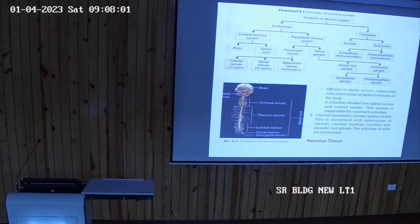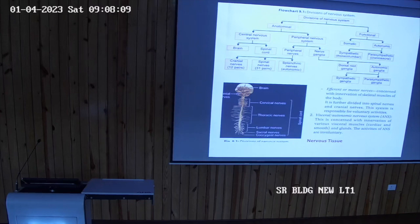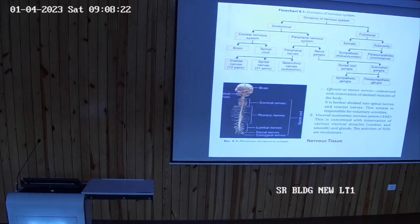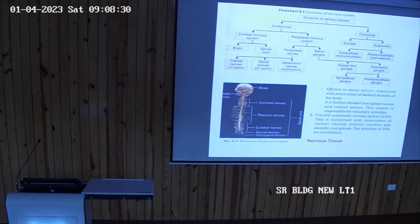The nervous system is a specialized system of basic tissues. The property of the nervous system is conductivity — it conducts impulses from the central nervous system to different parts of the body, and also receives information from different parts of the body or from the surroundings.